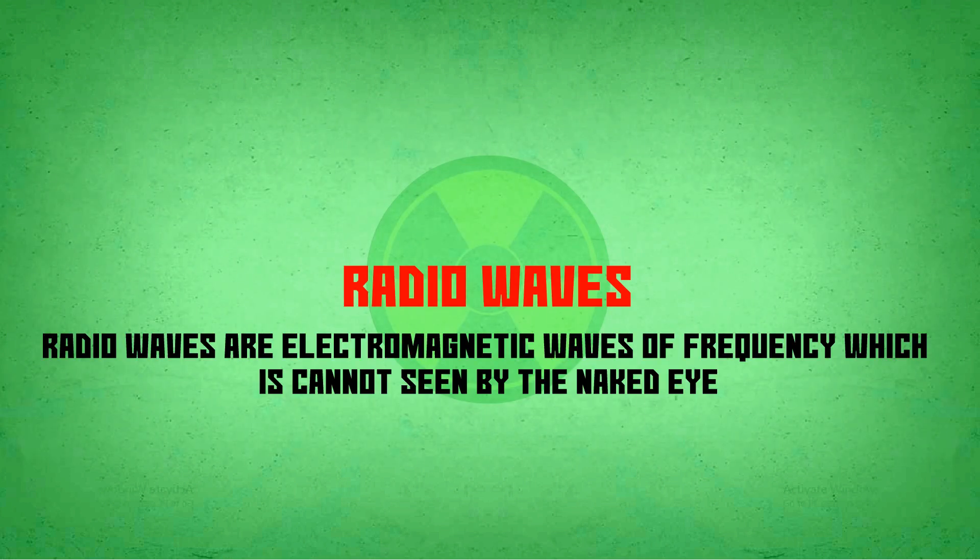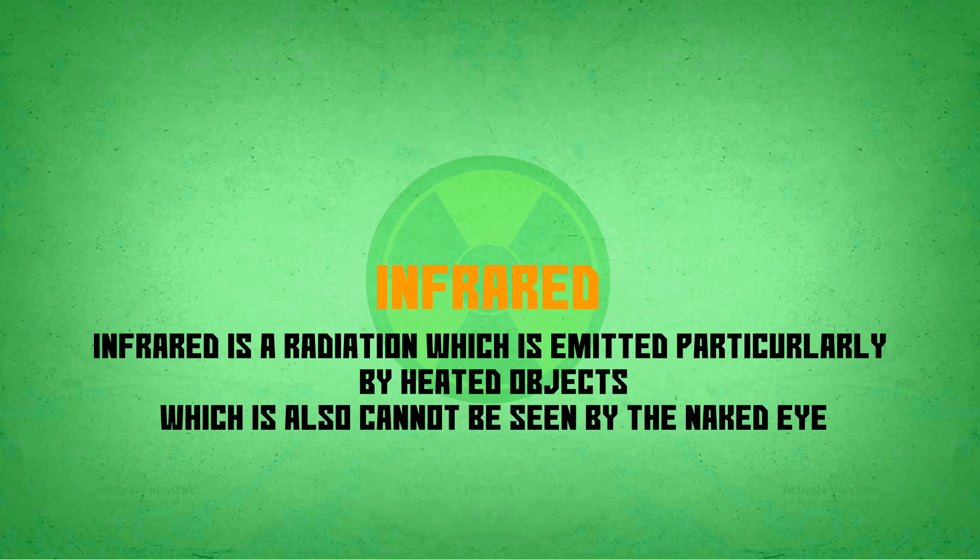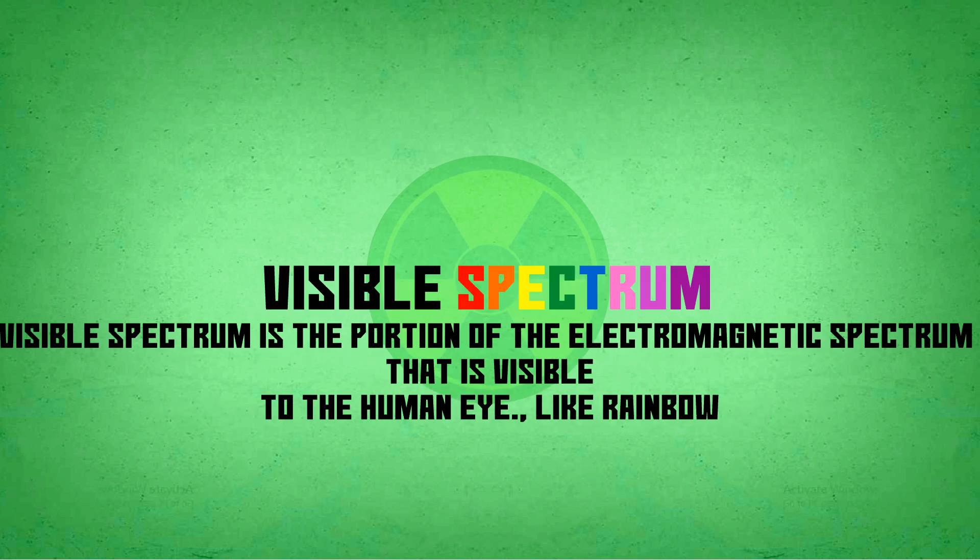Radio waves are electromagnetic waves of frequency which cannot be seen by the naked eye. Infrared is a radiation which is emitted particularly by heated objects, which also cannot be seen by the naked eye. The visible spectrum is a portion of electromagnetic spectrum that is visible to the human eye, like rainbow.